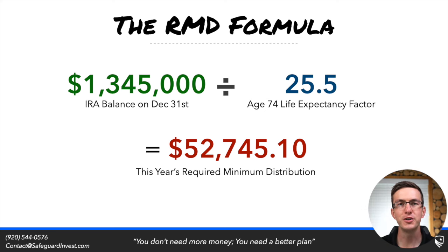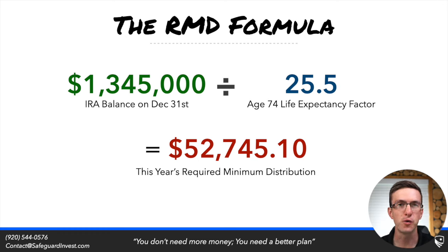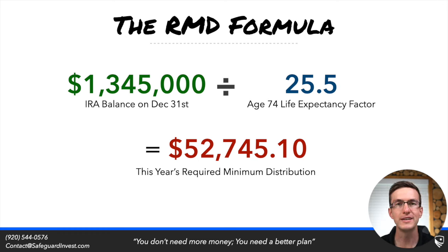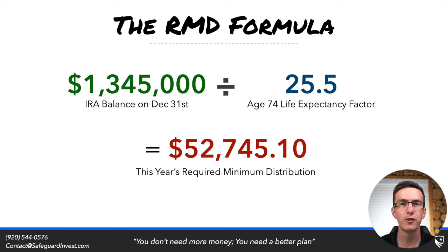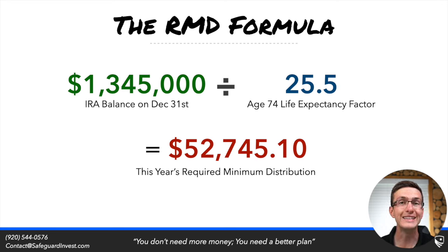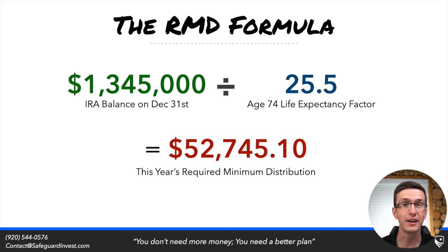The first thing that's important to understand about required minimum distributions is that it will always be based off the same formula — the only thing that changes are certain variables. Every year, your RMD for that given year is going to be based off the ending balance of that tax-deferred account on December 31st of last year, divided by something called a life expectancy factor. You'll have to look up your RMD table specific to your situation — for most people, that's going to be the uniform RMD table — and find your life expectancy factor based on the age you are turning that given year.